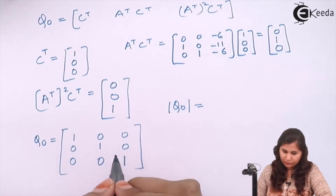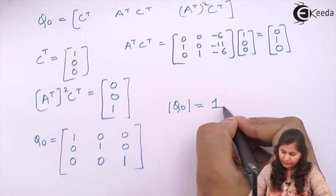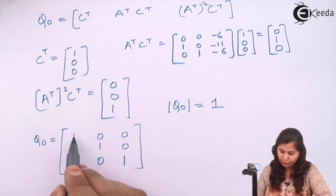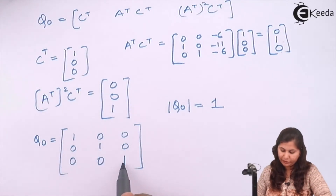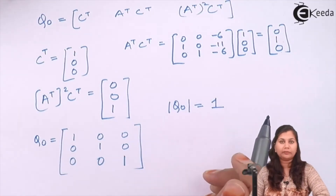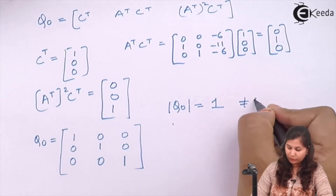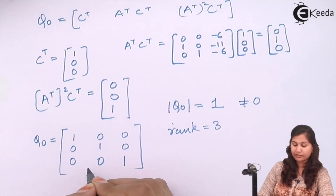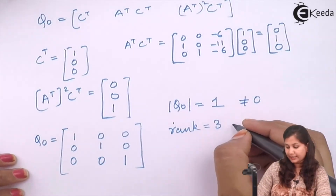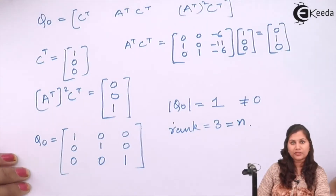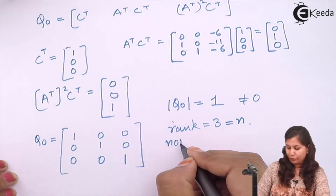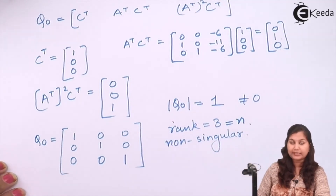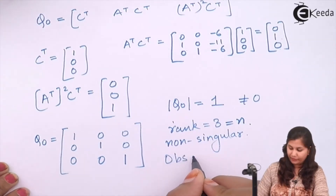So the Q₀ matrix becomes: Cᵀ = [1,0,0]ᵀ, AᵀCᵀ = [0,1,0]ᵀ, (Aᵀ)²Cᵀ = [0,0,1]ᵀ. The determinant of Q₀ is 1 (the first element 1 × (1−0) = 1, all other terms are 0). Since the determinant is not zero, the rank equals 3, which equals n. This is a non-singular matrix, so the system is completely observable.